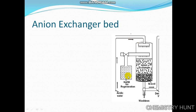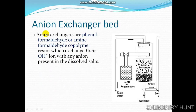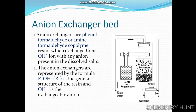Now for the anion exchanger: the acidic water is passed into the anion exchanger where it absorbs all the anions and gives an equivalent amount of hydroxide ions. Anion exchangers are phenol-formaldehyde or amine-formaldehyde copolymer resins which exchange hydroxide ions with any anions present in the dissolved salt. The anion exchangers are represented by the formula R'OH, where R' is the general structure of the resin and hydroxide is the exchangeable anion. All anions are retained in the anion exchanger bed and we get equivalent hydroxide ions.